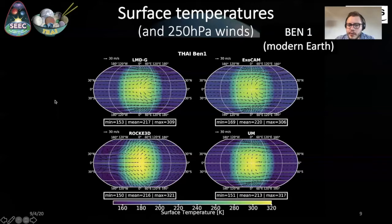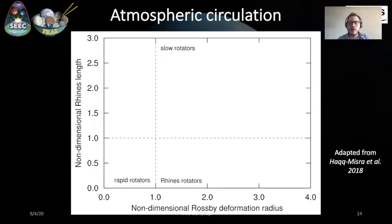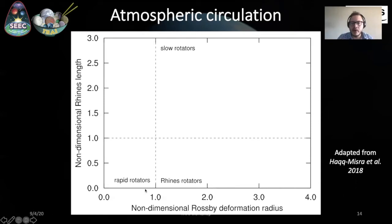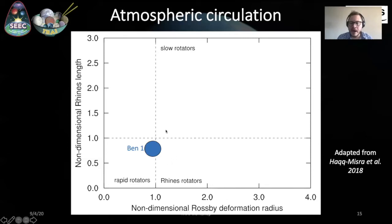These differences are most likely due to different circulation regimes. I have prepared a plot adapted from the landmark paper by Agnes Reital 2018, showing two important components that describe the dynamical regime of a planetary atmosphere: on the y-axis, the Rhines length, and on the x-axis, the Rossby deformation radius. Depending on the values of these parameters, you would expect a planetary atmosphere to be in a rapid rotator, a Rhines rotator, or a slow rotator regime. The peculiarity of TRAPPIST-1e is that it lies right at the tipping point between the rapid rotator and the Rhines rotator regime. This is the main reason why Rocky 3D is trapped in a Rhines rotator regime while the three other GCMs are in a rapid rotator regime.